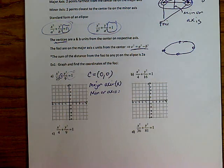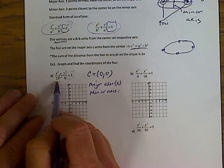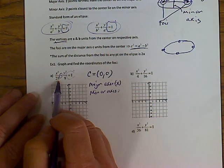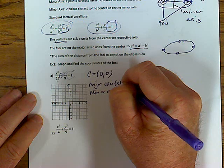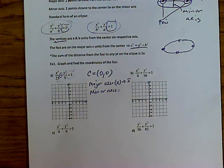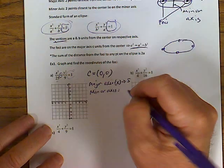Now how many units? Thinking about circles — did we do 25 or did we do the square root of 25? For circles you did the square root of 25. The same thing applies here: the major axis, you're going to go five units in each direction from the center.